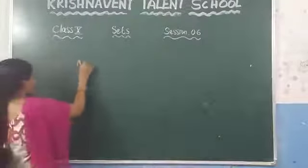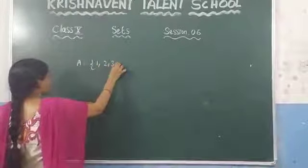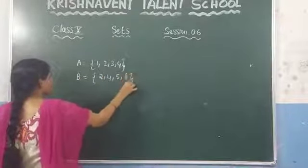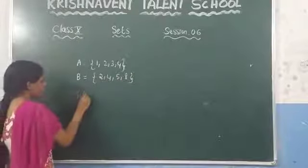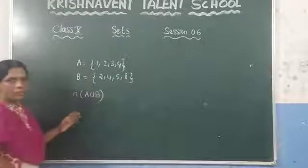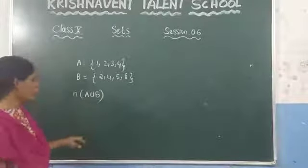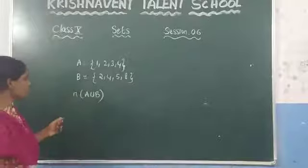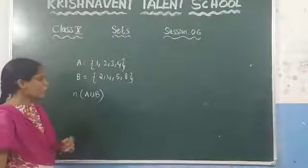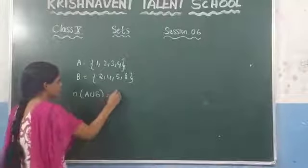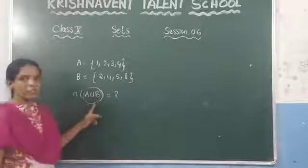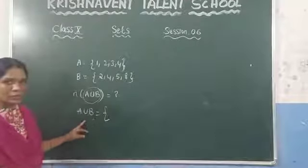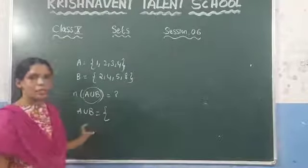Now let us see a few examples about the cardinality of the set. Suppose you have given two sets: set A = {1, 2, 3, 4} and set B = {2, 4, 5, 8}. If they ask you to find N(A ∪ B), that means you need to find the number of elements in A ∪ B. First, we need to find all elements present in A ∪ B — that means we write all elements present in both A and B.